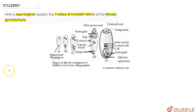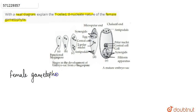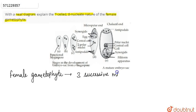If we talk about the female gametophyte, in the female gametophyte basically three successive mitotic divisions occur.